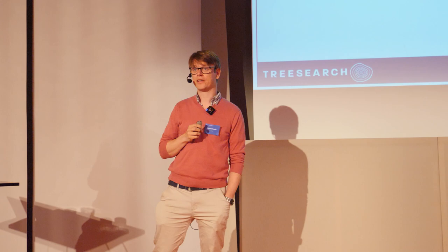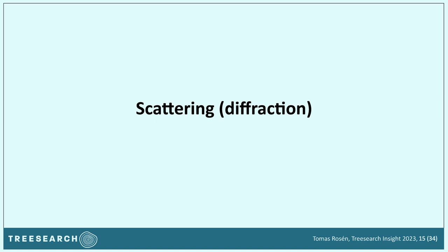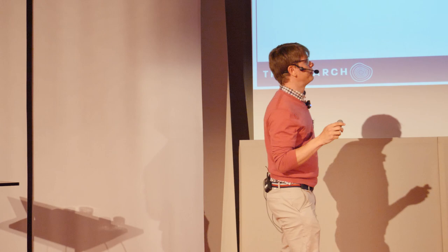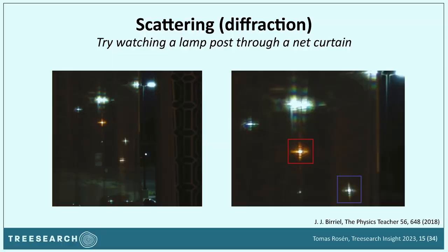That leads me into the complementary technique I'm also more familiar with: scattering and diffraction. Previously, I discussed scattering as a problem — it disturbs your image, you can't distinguish things. But the light is not scattered completely randomly. The pattern in which your object scatters light contains information. I like the example of looking at distant lamp posts through a net curtain — you'd see cross-shaped patterns, which tell you something about the horizontal and vertical thread sizes in the curtain.